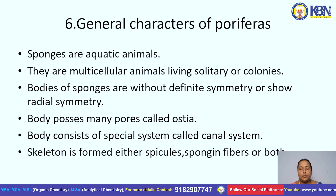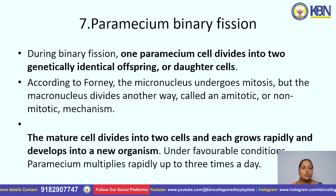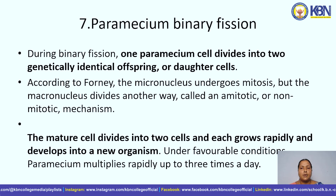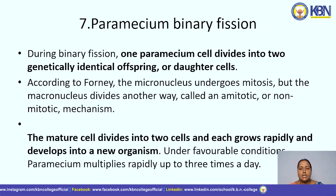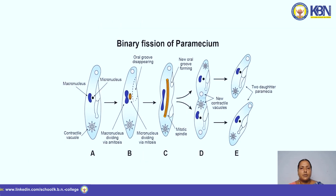Seventh topic is Paramecium binary fission. During binary fission, one Paramecium cell divides into two genetically identical offspring or daughter cells. The micronucleus undergoes mitosis, but the macronucleus divides by an amitotic or non-mitotic mechanism. The mature cell divides into two cells and each grows rapidly and develops into a new organism. Under favorable conditions, Paramecium multiplies rapidly up to three times a day. Here we have some pictures of Paramecium binary fission. Thank you.